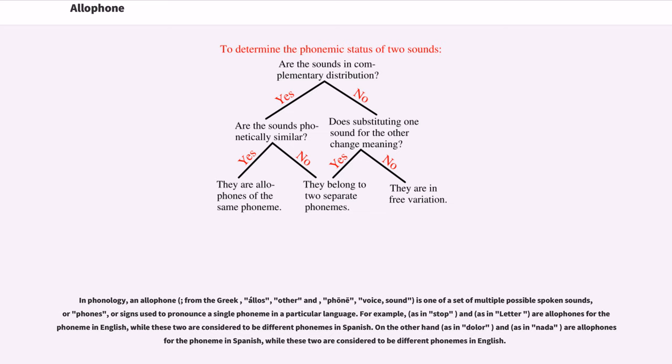or signs used to pronounce a single phoneme in a particular language. For example, t as in stop and t as in letter are allophones for the phoneme t in English, while these two are considered to be different phonemes in Spanish. On the other hand, d as in dolar and d as in nada are allophones for the phoneme d in Spanish, while these two are considered to be different phonemes in English.